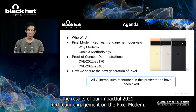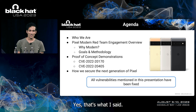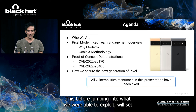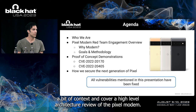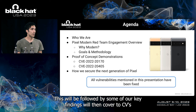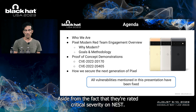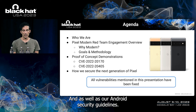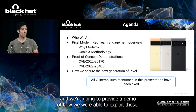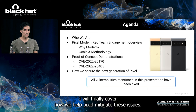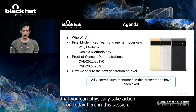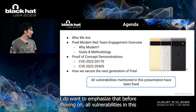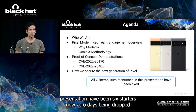Here's our session agenda. We'll provide a brief overview of who we are and share the results of our impactful 2021 Red Team engagement on the Pixel Modem — yes, 2021; it took us that long to get PR approval. Before jumping into what we were able to exploit, we'll cover a high-level architecture review, then key findings, and two CVEs that are rated critical severity on NIST. We'll also demo our exploit chain and cover how we helped Pixel mitigate these issues. All vulnerabilities in this presentation have been fixed — no zero days being dropped.